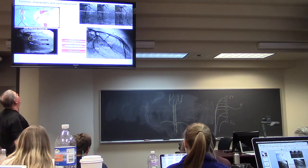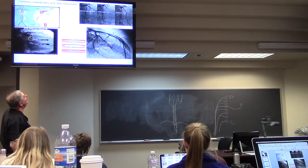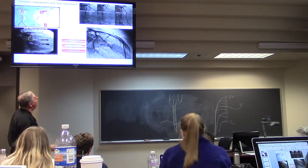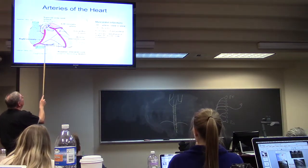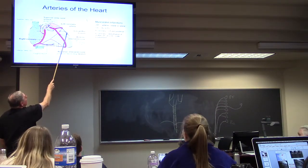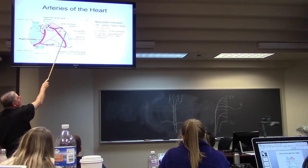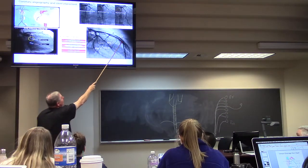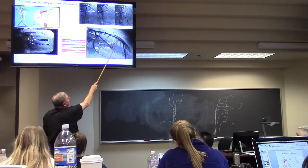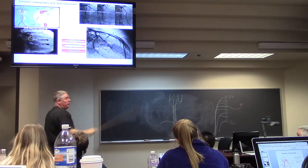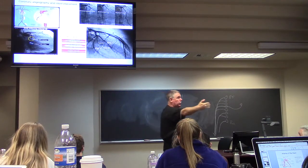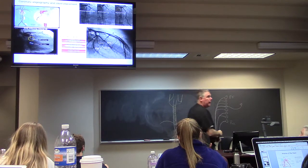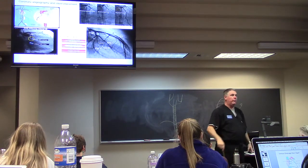The one other branch you'll probably see in lab: you've got the right marginal here, and there's a marginal that comes off up here called the diagonal artery, which is usually pretty large. You'll be able to see the LAD, the diagonal, and the circumflex on the top part of the heart.